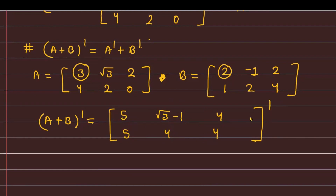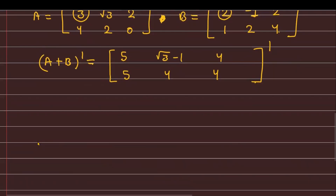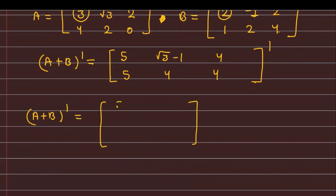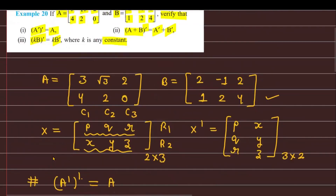Now taking the transpose of (A+B), the matrix (A+B)^T gives us: first column becomes first row — 5, root 3 minus 1, 4 — and the second column becomes the second row — 5, 4, 4. We can call this equation number 1.